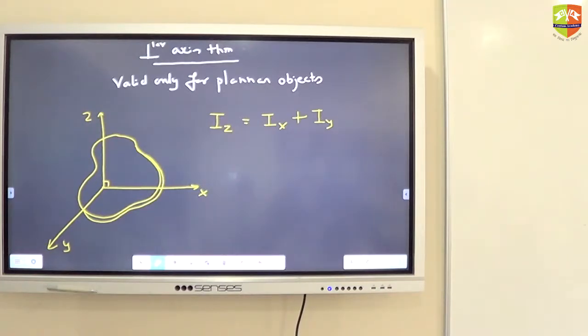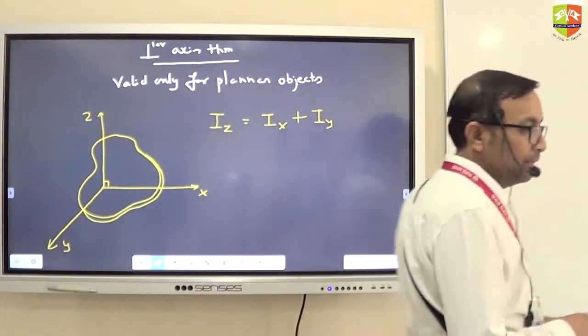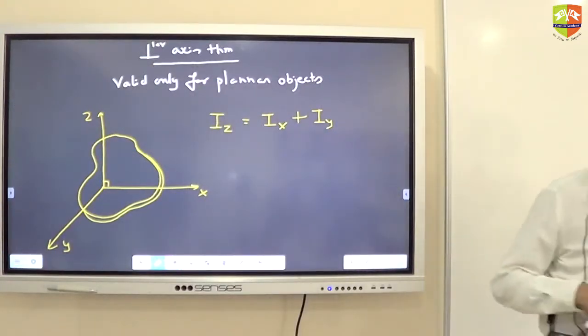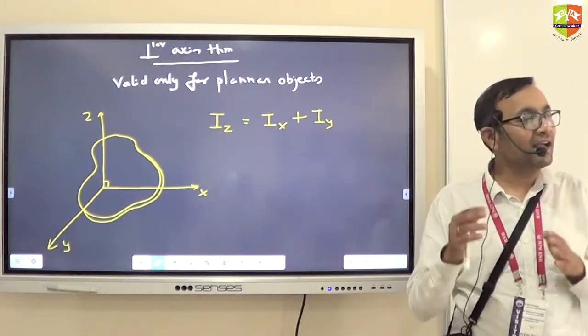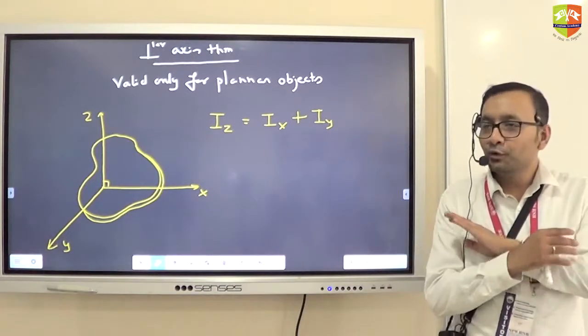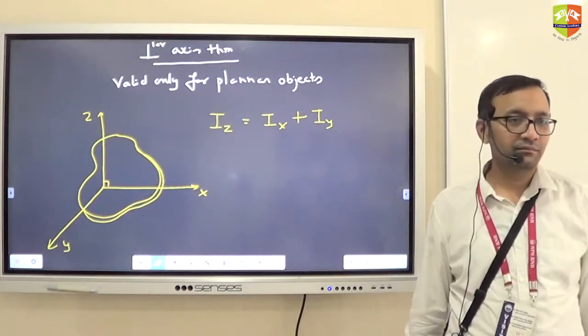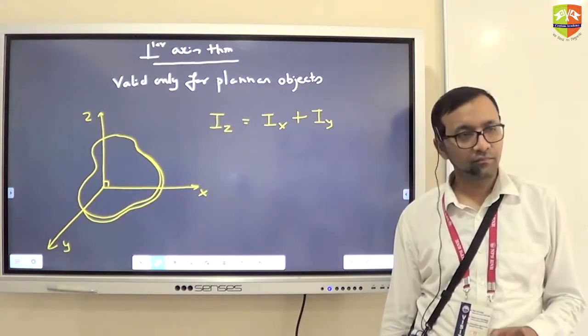Moment of inertia about Z axis will be the sum of the moment of inertia about X and Y. There is no restriction that it should pass through center of mass. Z axis must be perpendicular to the plane of the object. I_Z is perpendicular to the plane. I_X and I_Y can be in the plane. But I_Z must be perpendicular to the plane. And there is a reason why they are called I_X, I_Y and I_Z. The reason is they are all mutually perpendicular to each other.